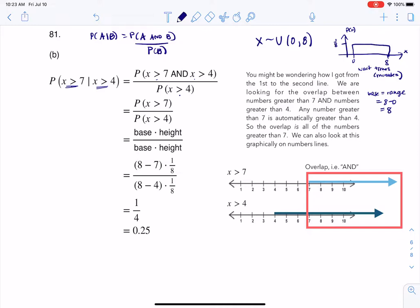So if you want to calculate probabilities, which we do, and you have a uniform distribution, we're going to use base times height. But the first thing we have to figure out is, what does this x being greater than 7 and being greater than 4 simplify to? And whenever you're talking about 'and,' you're talking about an overlap.